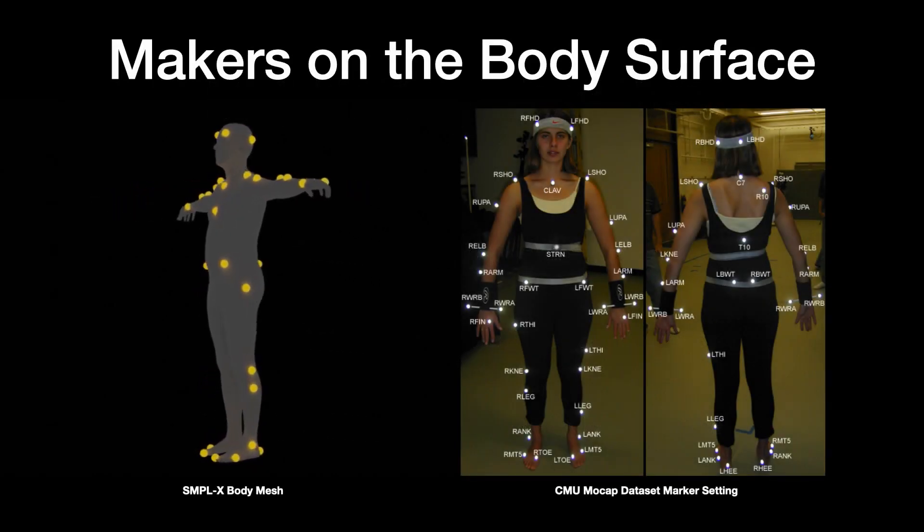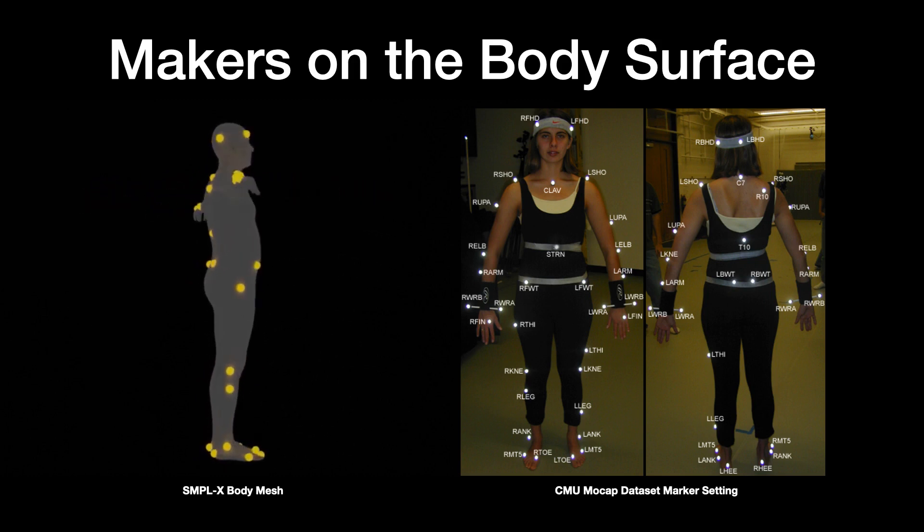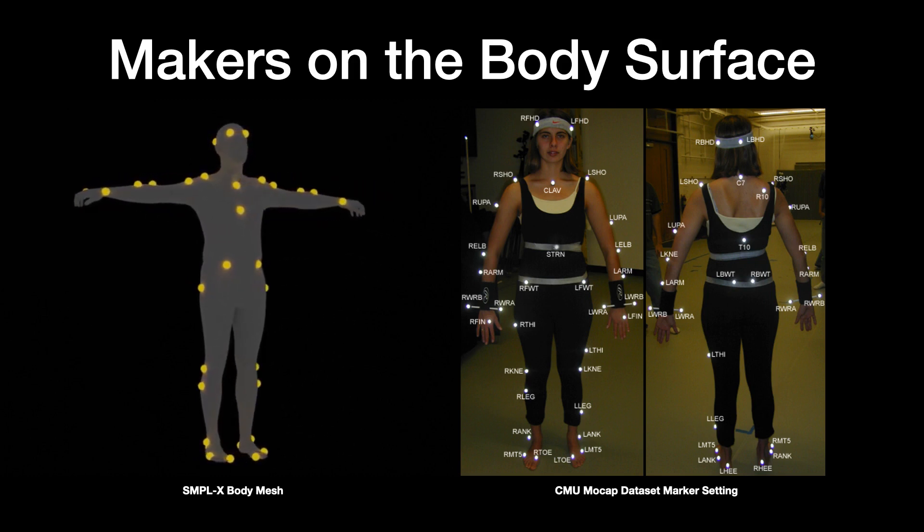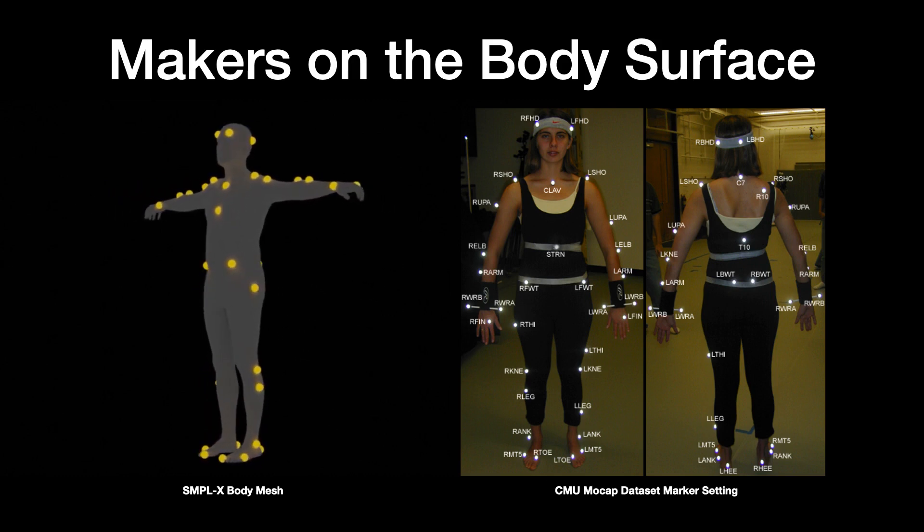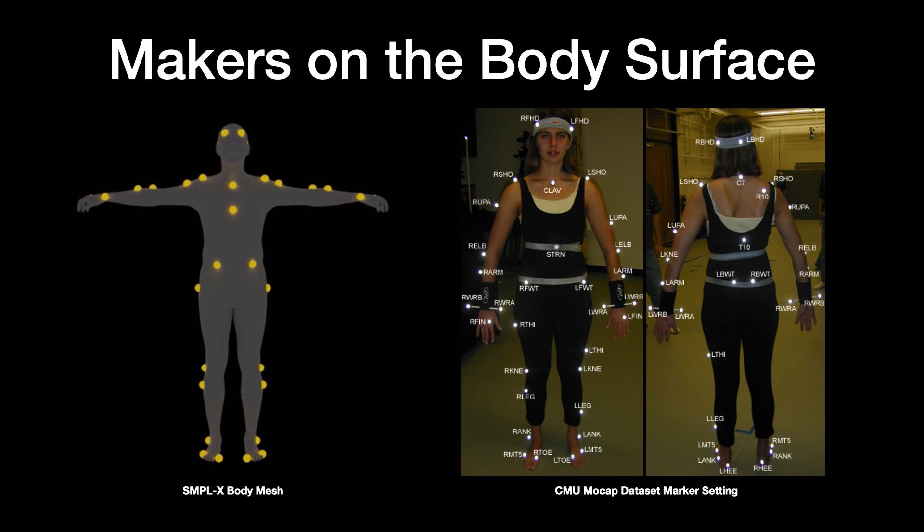Modern motion capture systems can use a sparse set of mocap markers to precisely capture human motion. While our markers are virtual markers, and we are thus free to choose any markers we wish, we use the same marker set as the CMU mocap dataset. We use the SMPL exported model and select the 41 mesh vertices corresponding to these real markers.